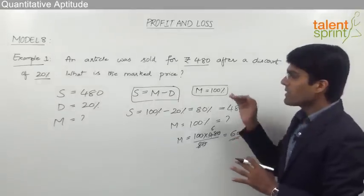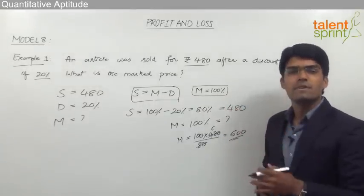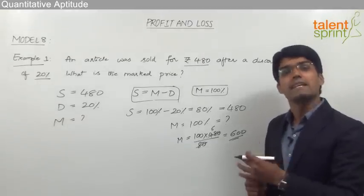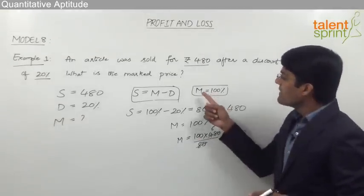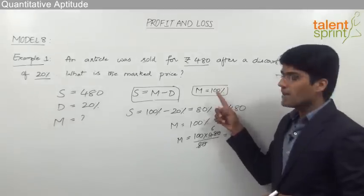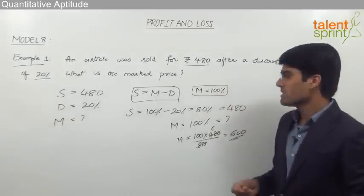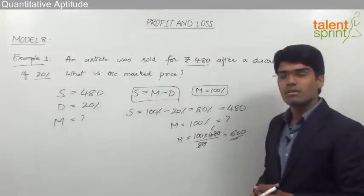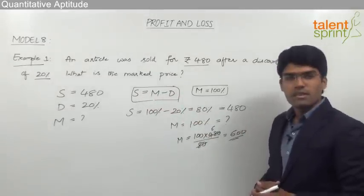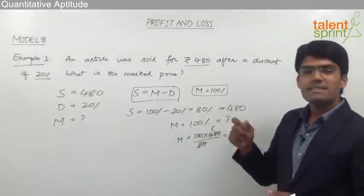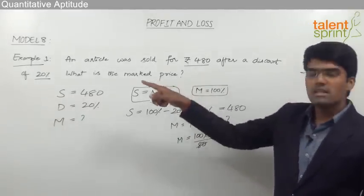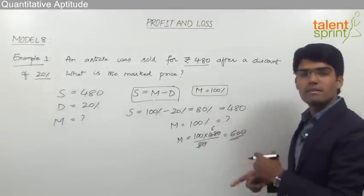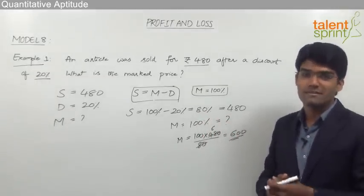This question can be solved in a similar manner as in profit and loss — there the cost price is taken as 100%, here the marked price is taken as 100% and all calculations are done on it. So selling price is found to be 80%. If the question asks for the discount in rupees, since the discount was 20% and 80% equals 480, we find 20% by cross multiplication.